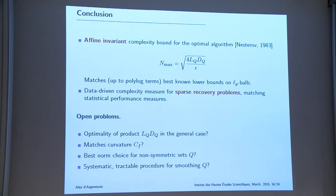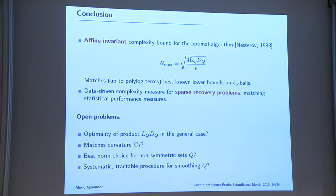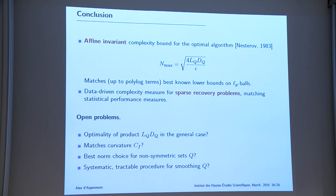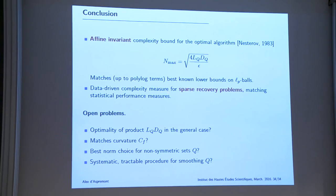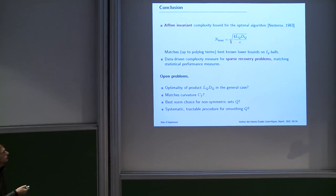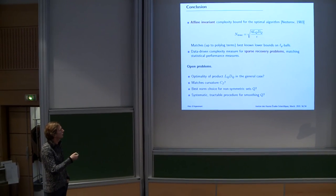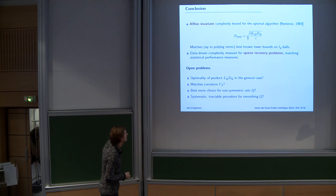To sum up: somewhat unrelated results, but the idea is to produce complexity estimates that are close enough to the data to say something about the complexity of one optimization problem versus another. We got a formulation of Nesterov's optimal algorithm whose complexity bounds are affine invariant with respect to an affine change of coordinates, and turn out to be optimal at least on L_q balls. And we have a completely data-driven complexity measure for sparse recovery problems which matches exactly the quantities used to measure statistical performance.